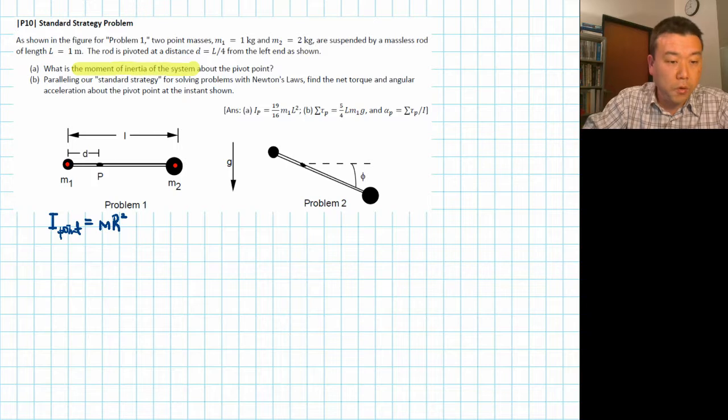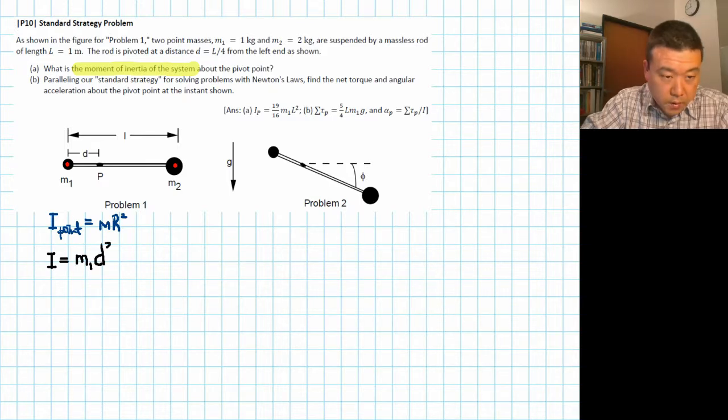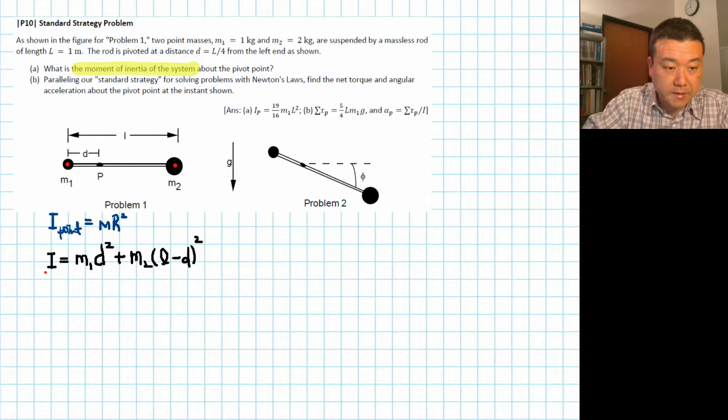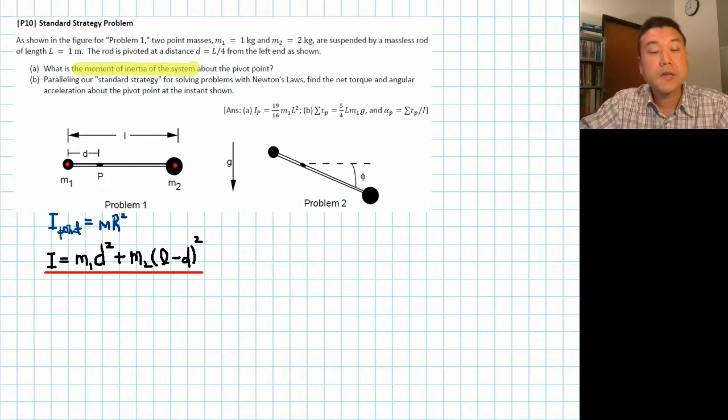So here the total rotational inertia would be rotational inertia of M1, so M1 D squared, plus the rotational inertia of M2, so M2 times the distance squared, which will be L minus D squared. That's the rotational inertia of the whole object. This is an answer we'll need in future parts, so I'll just keep it here.